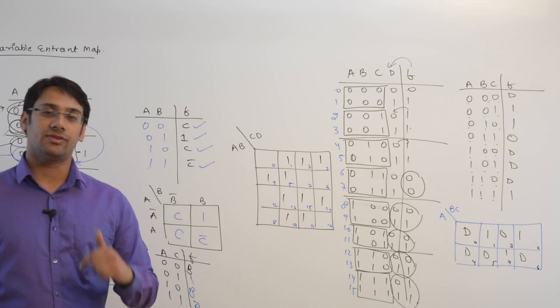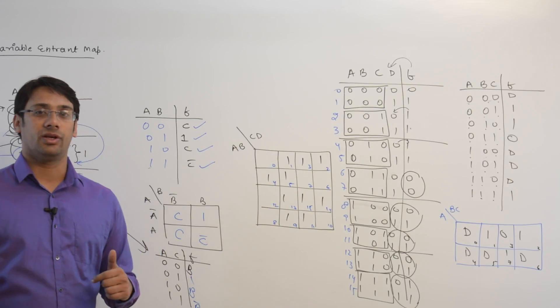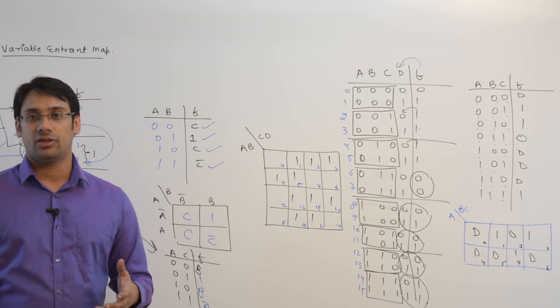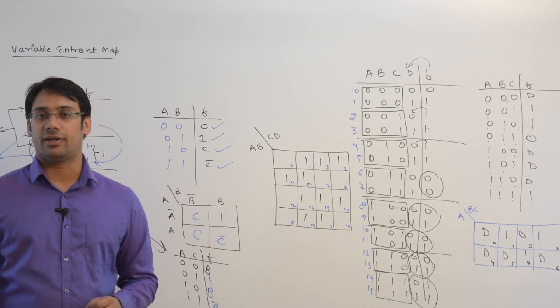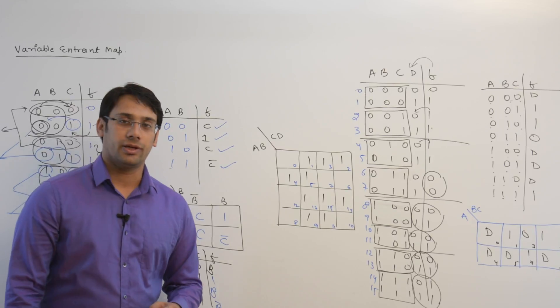Now let us see how we can get a minimized equation by solving a Variable Entrant Map.